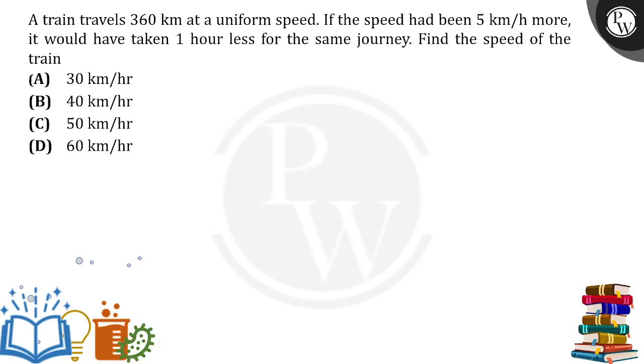Hello everyone. A train travels 360 kilometers at a uniform speed. If that speed had been 5 km per hour more, it would have taken 1 hour less for the same journey. Find the speed of the train.